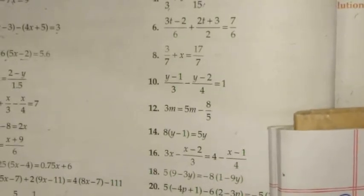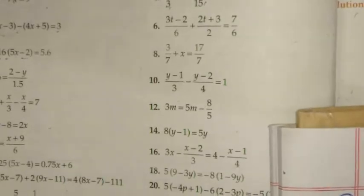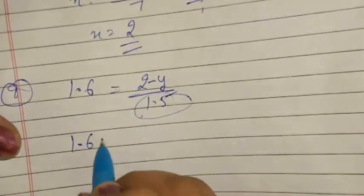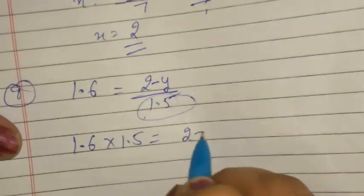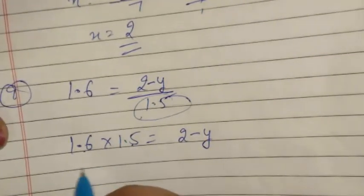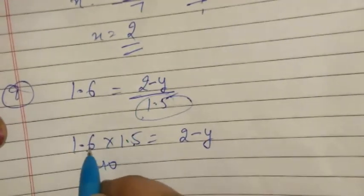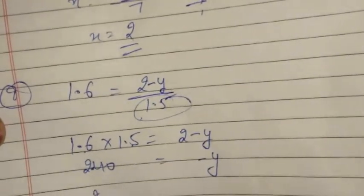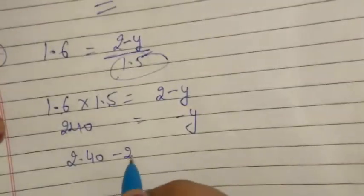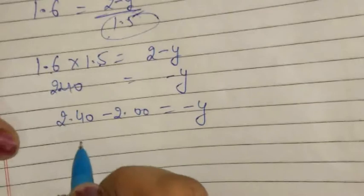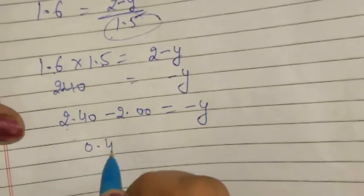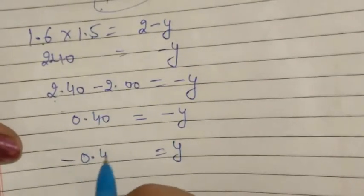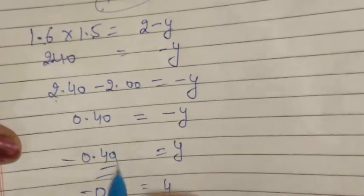Question 9: solve 1.6 = (2 - y)/1.5. Transposing 1.5 to the left: 1.6 × 1.5 = 2 - y. Multiplying: 2.40 = 2 - y. Transposing 2: 2.40 - 2.00 = -y, so -y = 0.40, meaning y = -0.4.